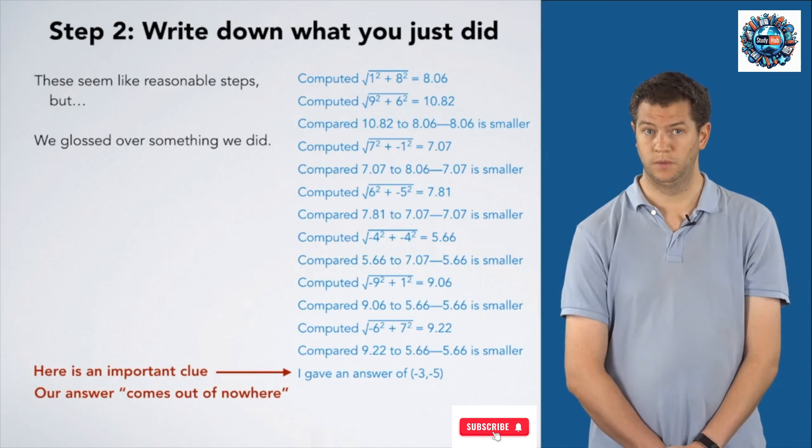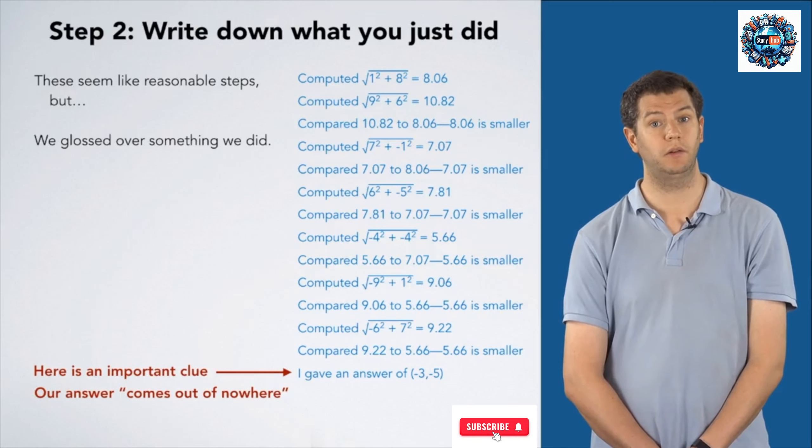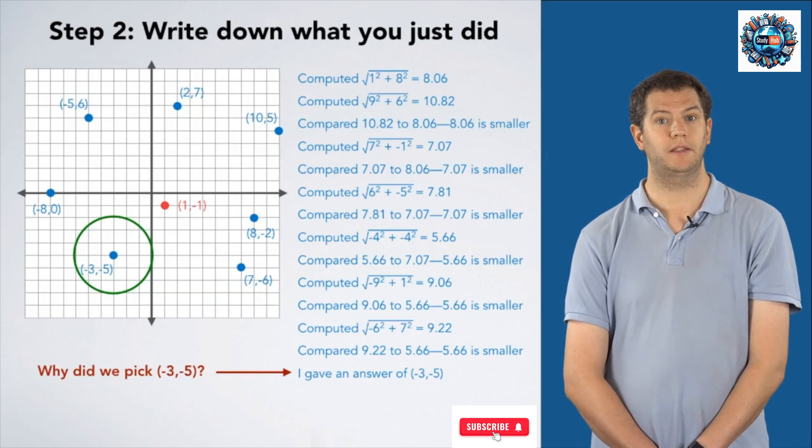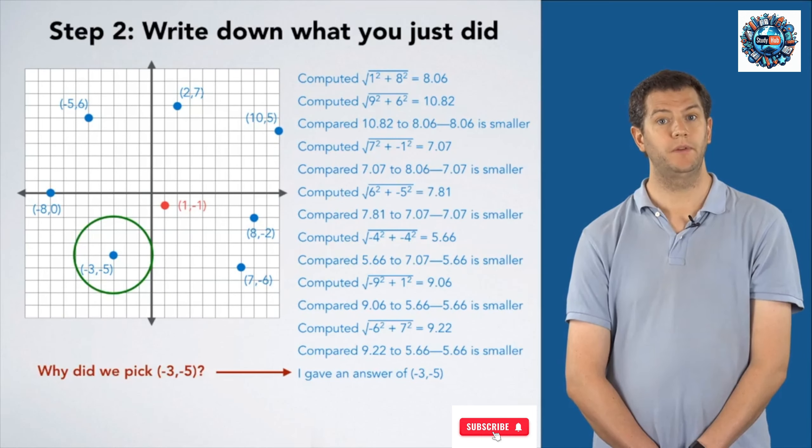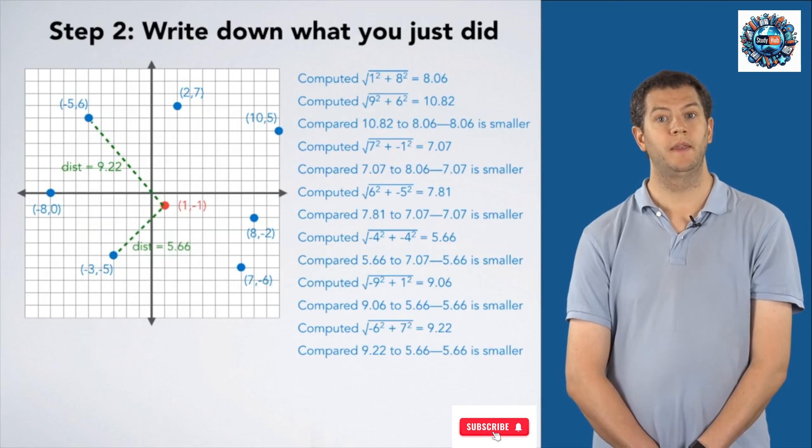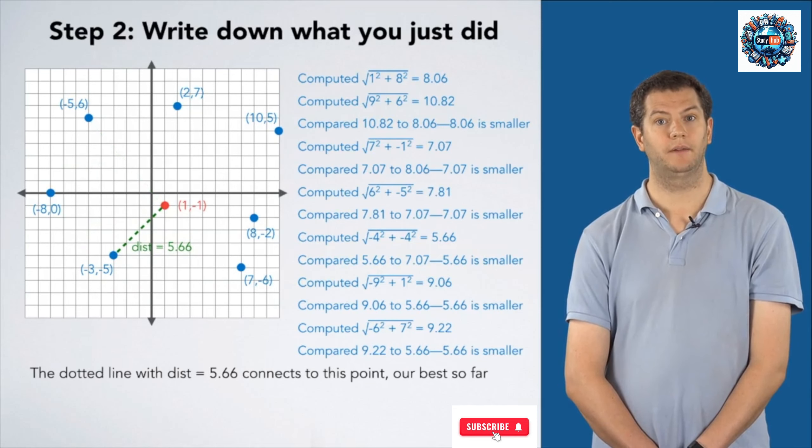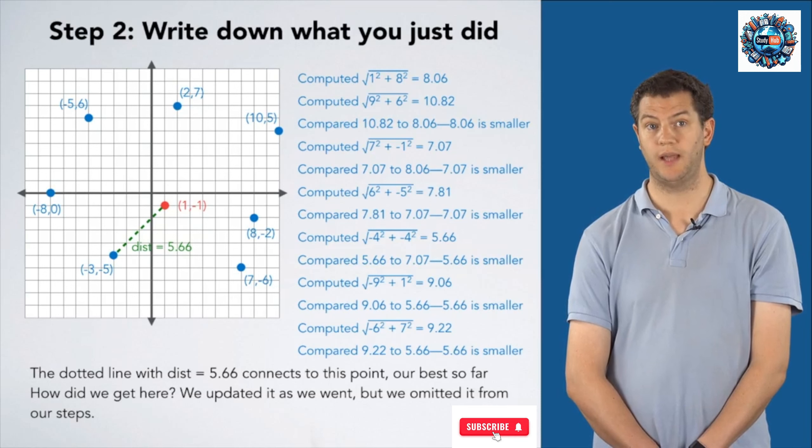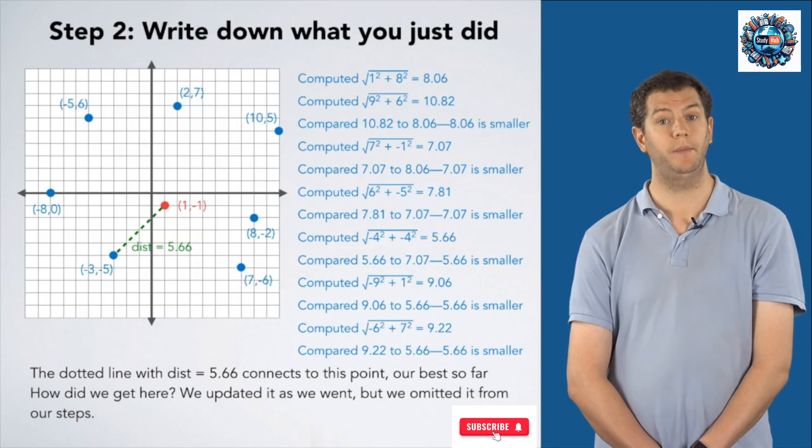We may notice this now. We may notice it when we go to generalize, in which case we need to come back and fix it. Why was it that we picked (-3,-5) as our answer here? Reviewing our last steps, the last remaining dotted line of length 5.66 is what we were keeping track of, our best choice so far. We started at (2,7), then we went around and updated it each time we found a shorter distance.